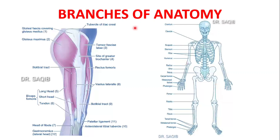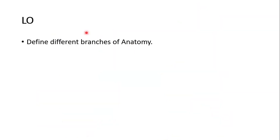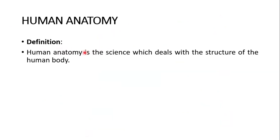I am Dr. Sakyam Mansur and today I will discuss with you branches of anatomy, the very important science of medicine. So first I will enumerate the branches, then I will define each of them. The learning objective is to define different branches of anatomy. Human anatomy is the science which deals with the structure of the human body.